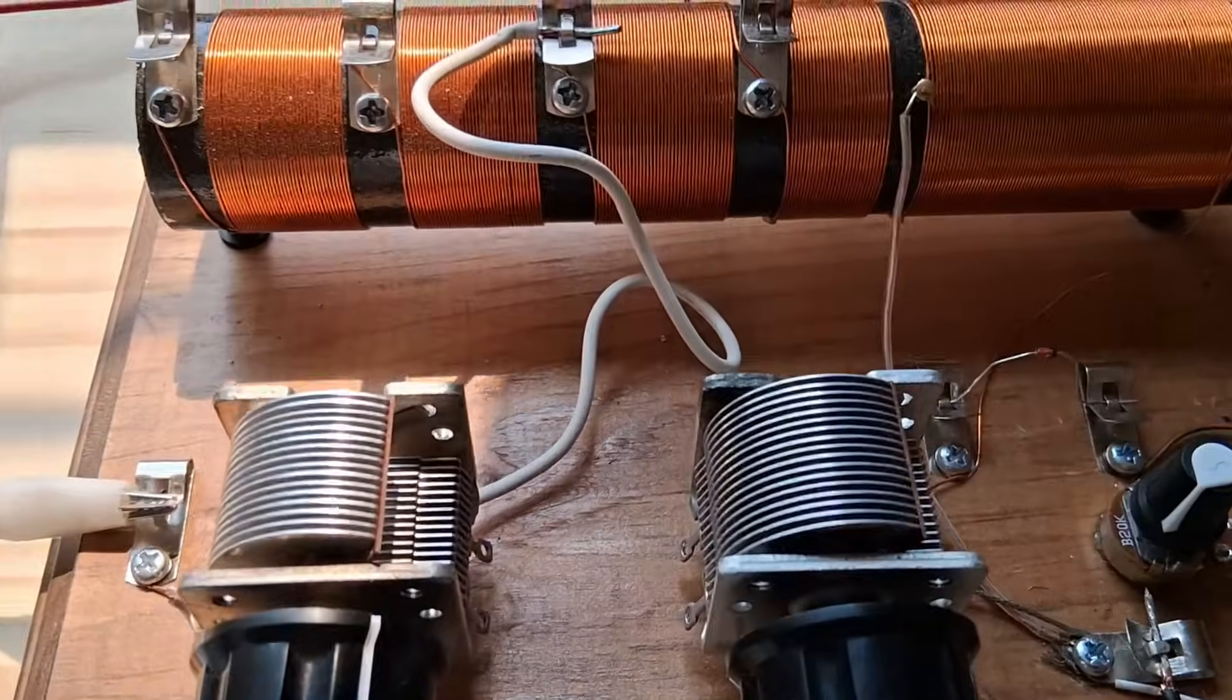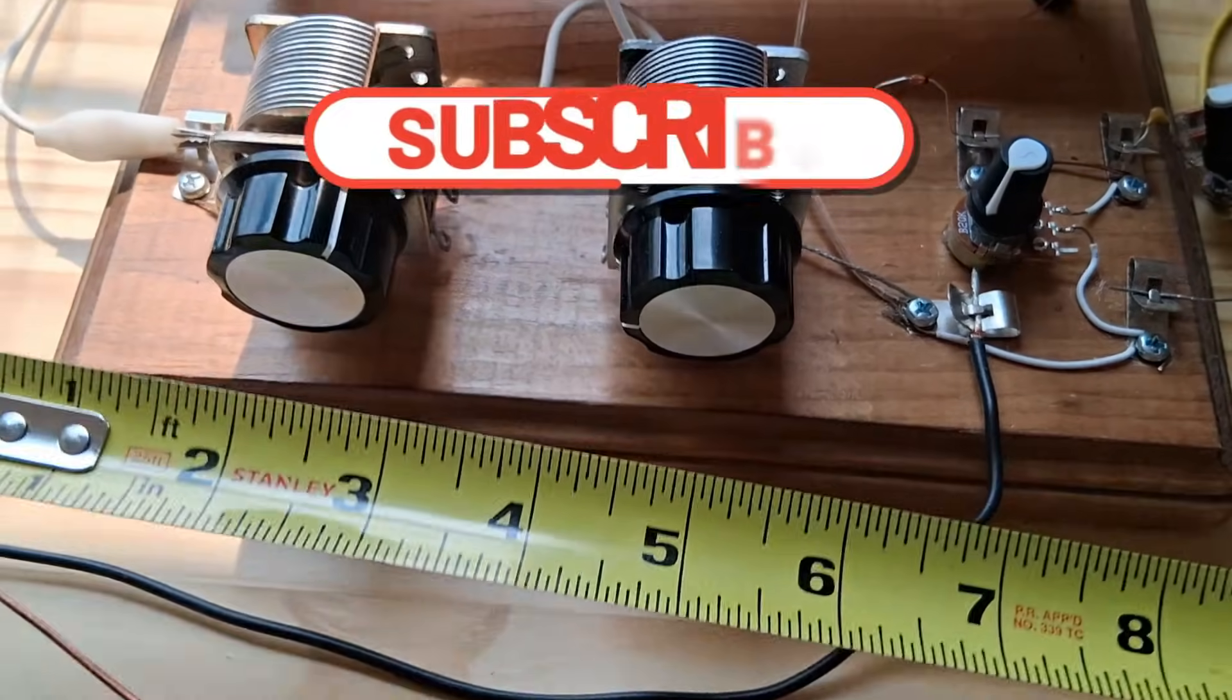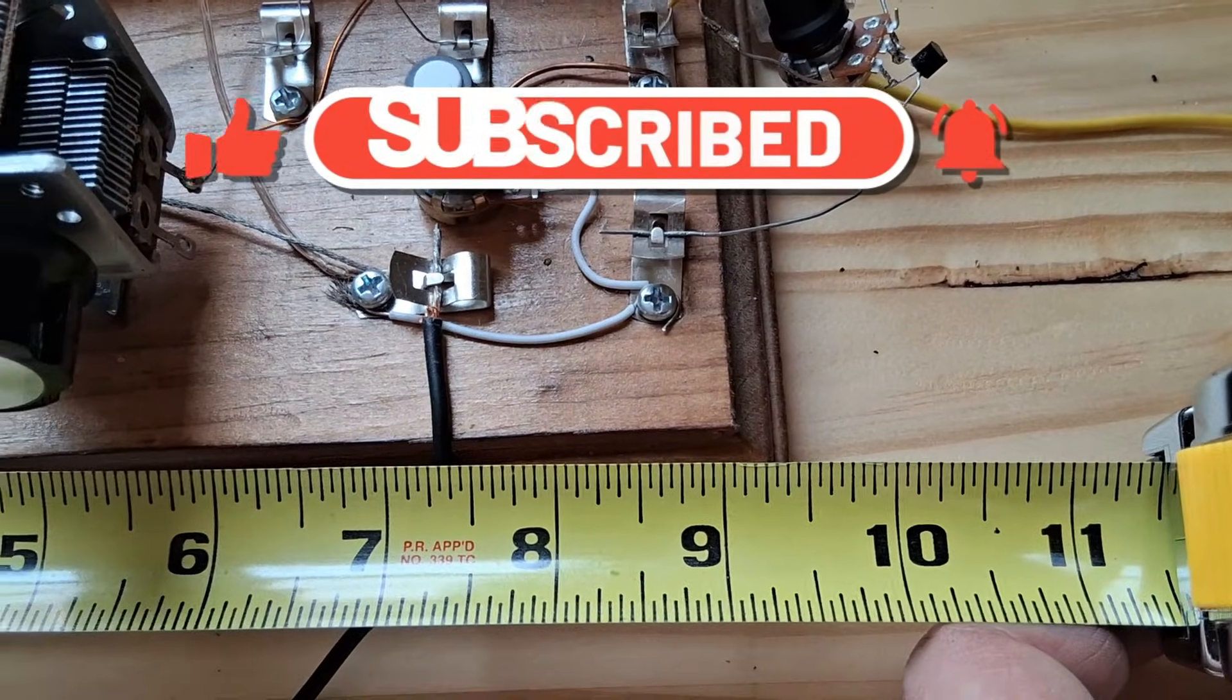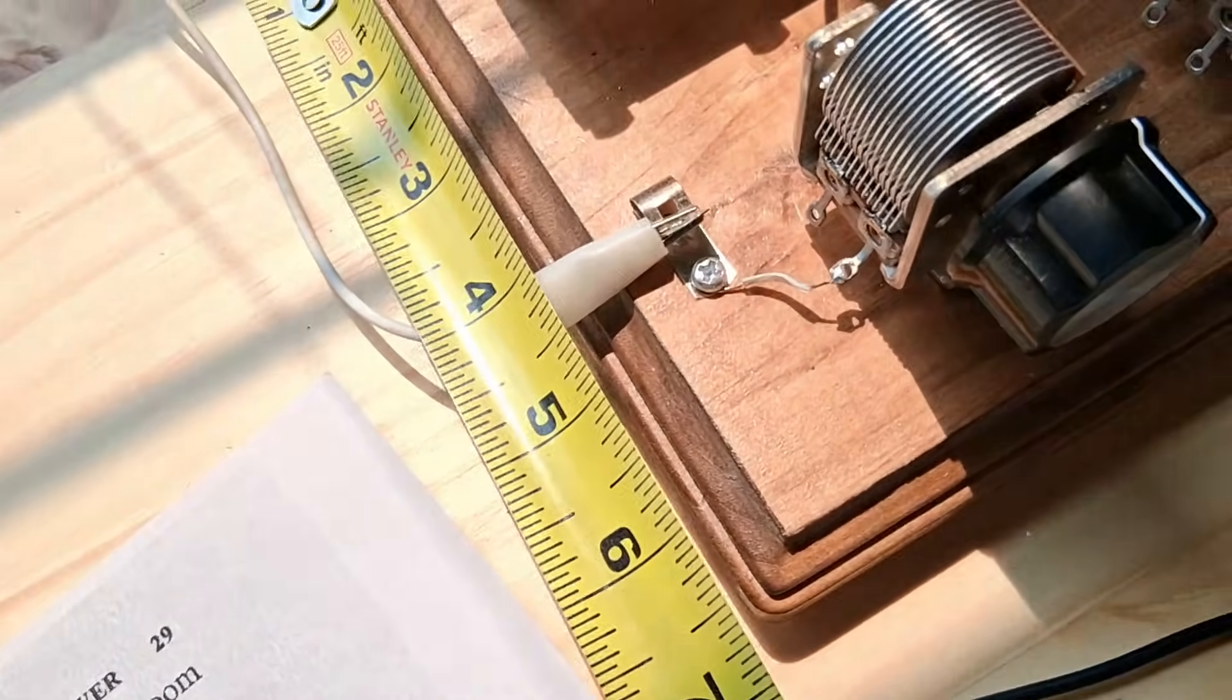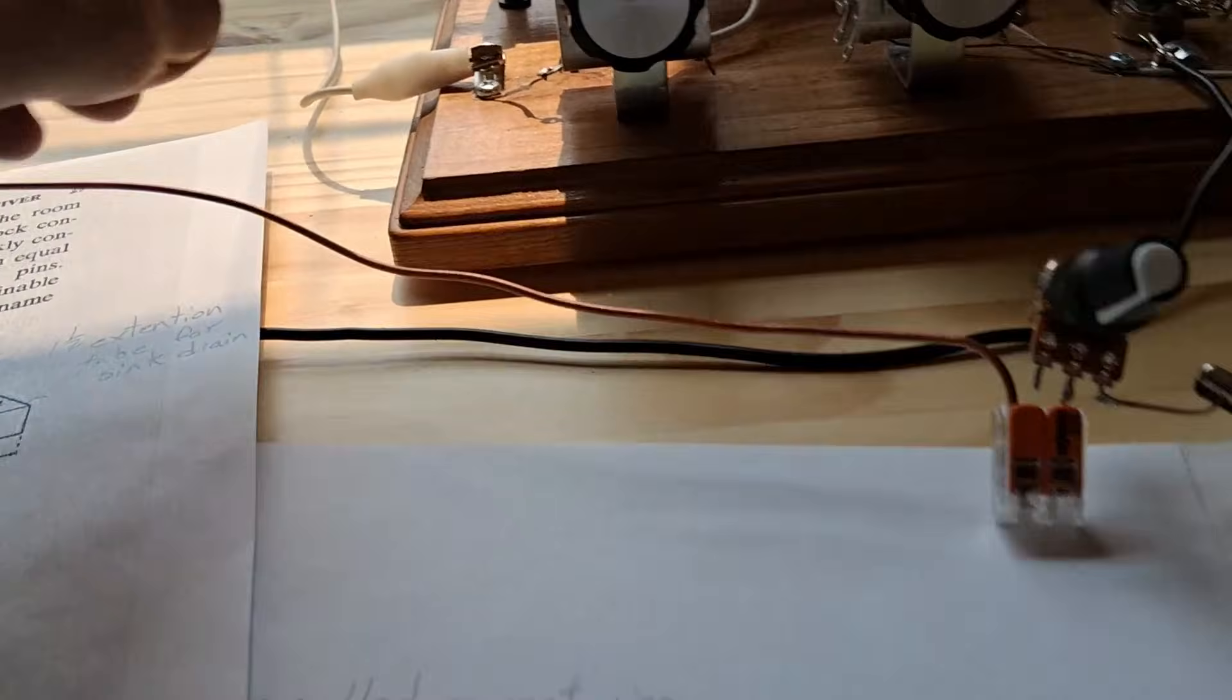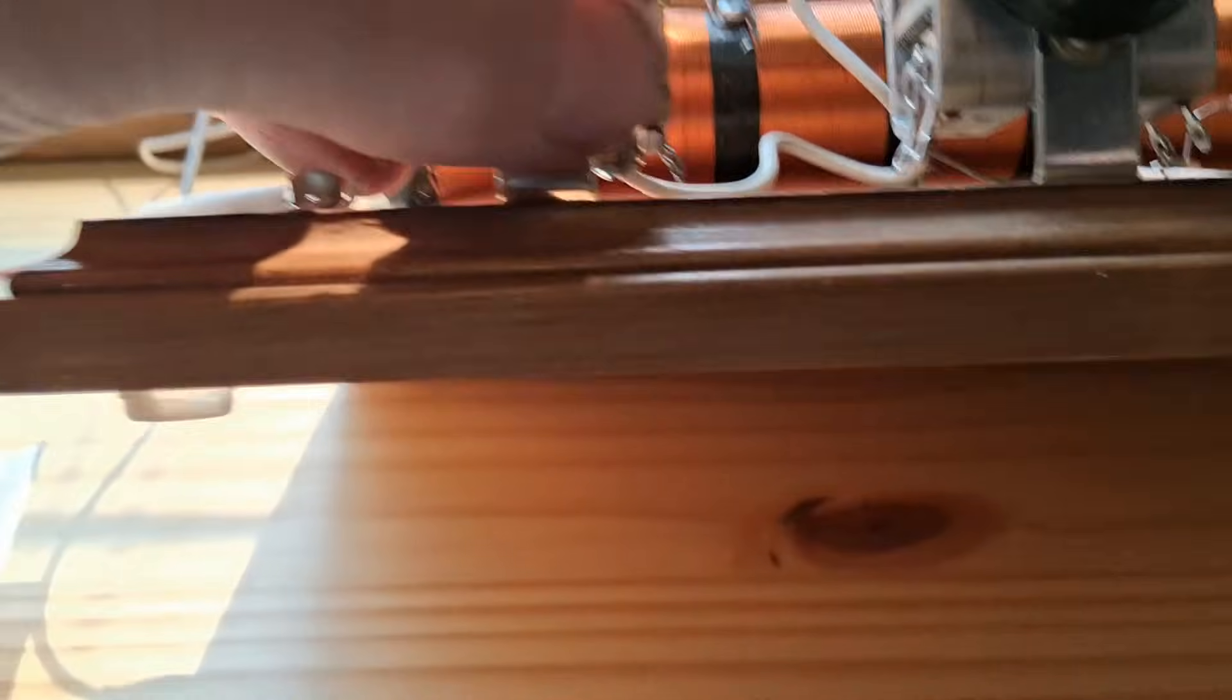And now I'll go over the construction of this. I have a wood base. I think I got it from Hobby Lobby. And it is a little under nine and a half by looks like six and a half. And it was just bare wood. I stained it and put some varnish on it. And I have it setting on some drawer bumpers. They're just adhesive stuck to the bottom.